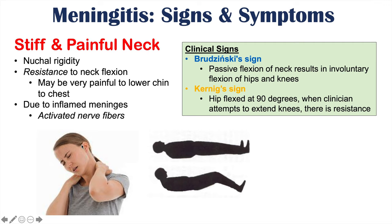When you passively flex someone's neck to try to get them to touch their chin to their chest, if they have Brudzinski's sign, what happens is they involuntarily flex their hips and their knees.